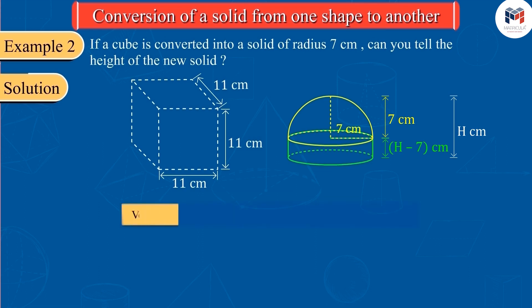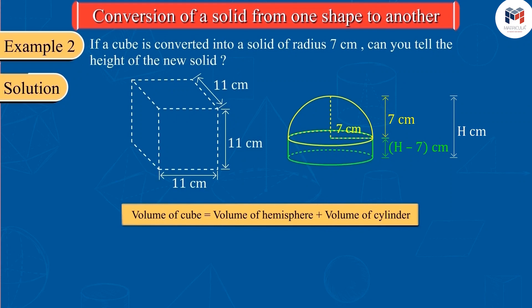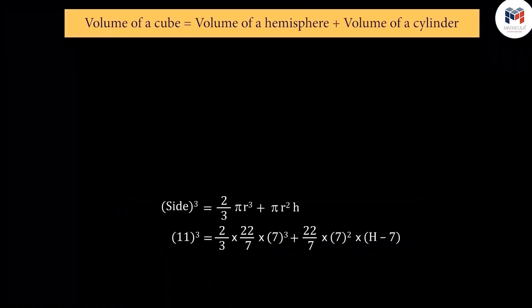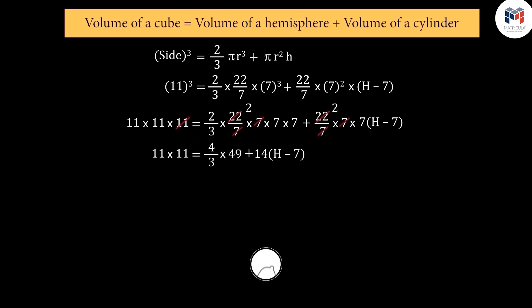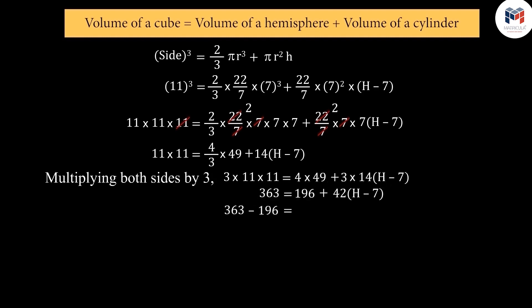So, the volume of the cube here will be equal to the sum of the volumes of the hemisphere and the cylinder. On substituting all values and solving them, we get H equal to 10.98.